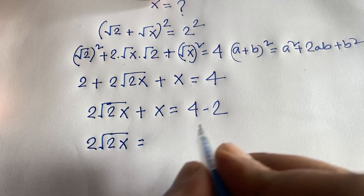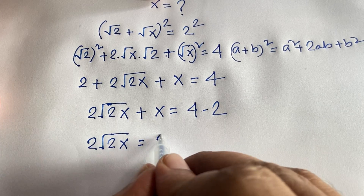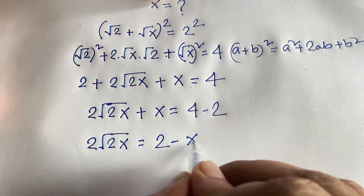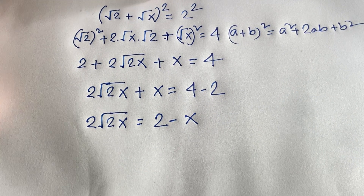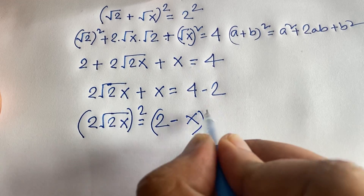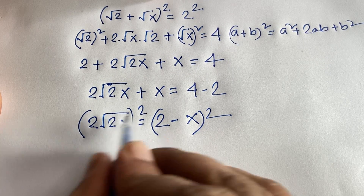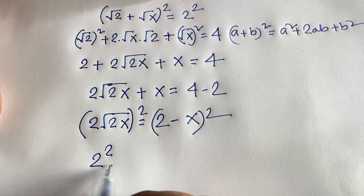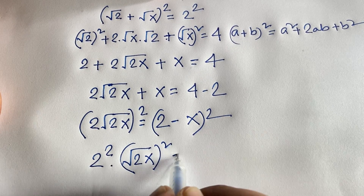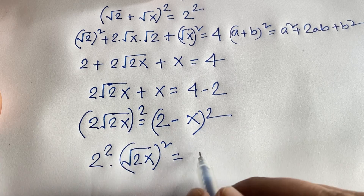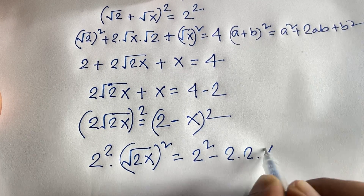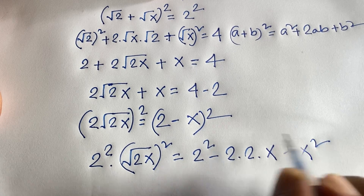So 4 minus 2 equals 2, and if I move x to that side it becomes negative x. The expression is: 2√(2x) = 2 − x. Then I square both sides again, using the (a − b)² identity: a squared minus 2ab plus b squared, where b is x.